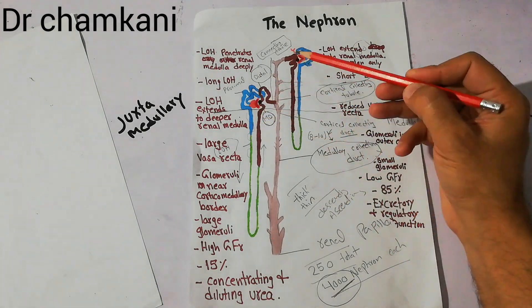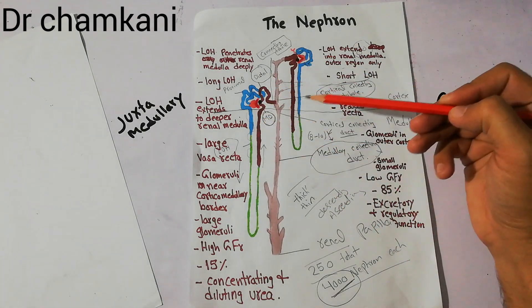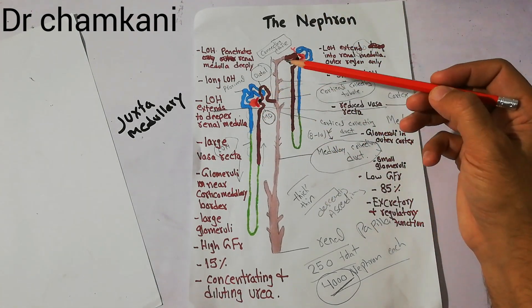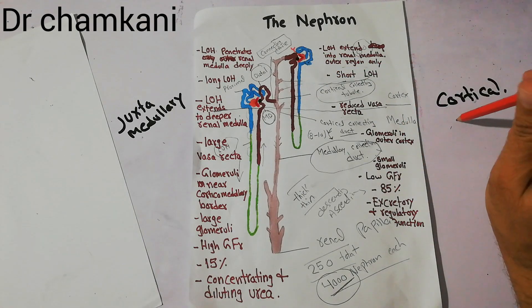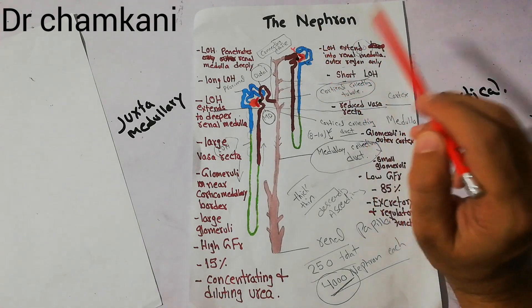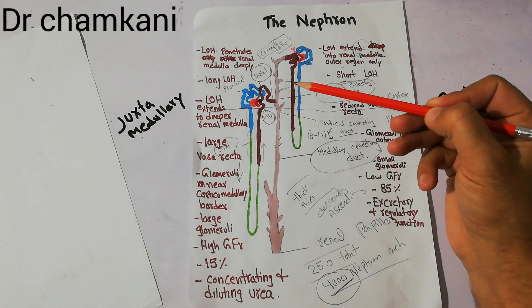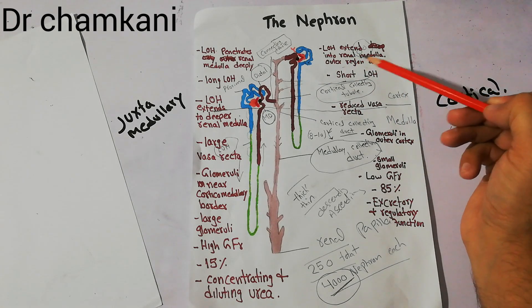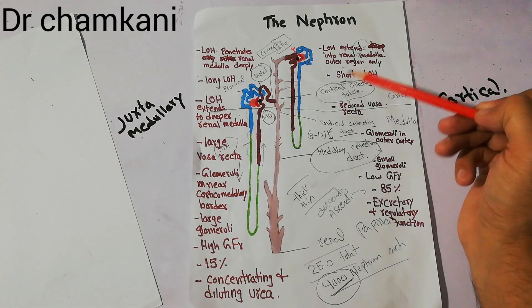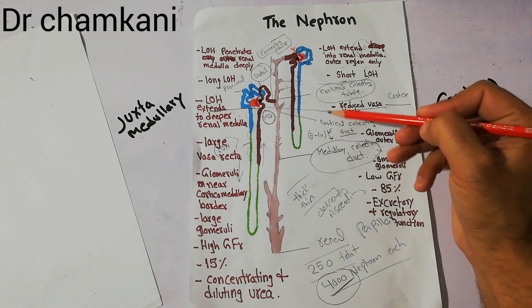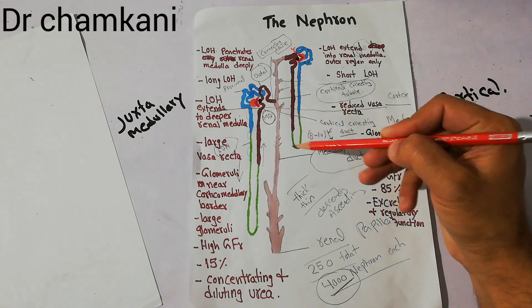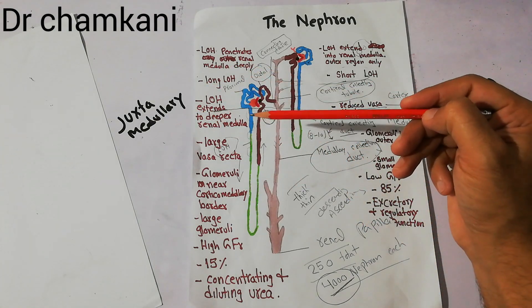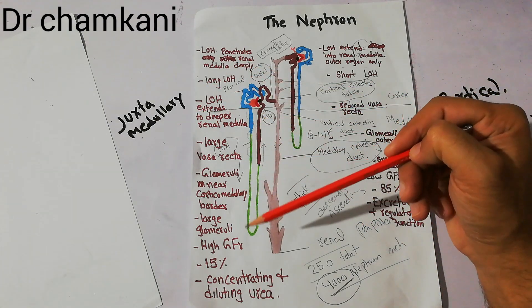These two different types of nephrons are both present in the same kidney. The glomeruli of the cortical nephron are present in the renal cortex, while the loop of Henle extends into the outer region of the medulla only. The juxtamedullary nephron has a loop of Henle which penetrates deep into the medulla.